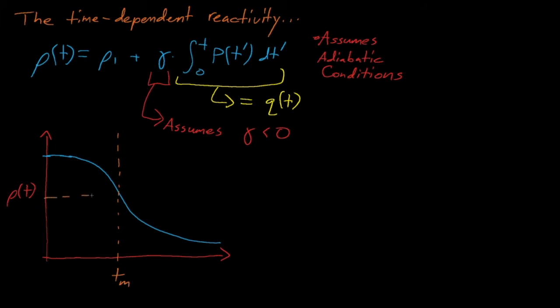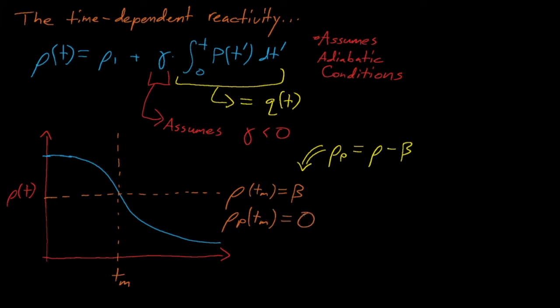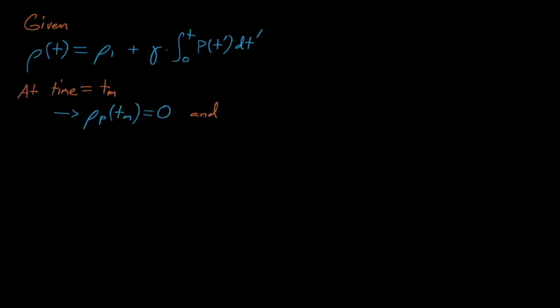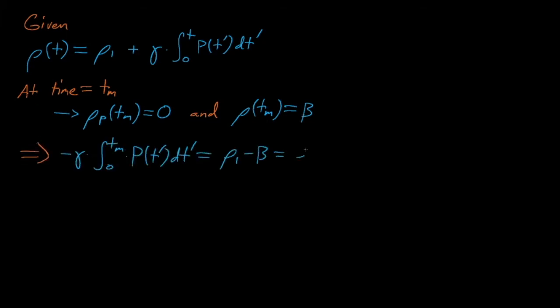At time T_m, the reactivity in the system is exactly equal to beta-effective. Recalling our definition of the prompt reactivity, we see that at T_m the prompt reactivity is equal to zero. This means that after the peak power occurs, the system is no longer prompt supercritical, which causes the power to decrease quickly. Given our expression for the reactivity and that the prompt reactivity is zero at T_m, we see that gamma times the power integral must equal the initial prompt reactivity rho_P1. The energy released during the first half of the transient is simply equal to negative rho_P1 divided by gamma_E.